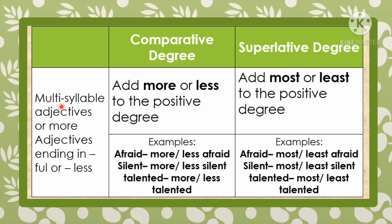For multi-syllable adjectives or adjectives ending in -ful or -less, to form the comparative degree, add 'more' or 'less' before the positive degree. Examples: 'afraid' becomes 'more afraid' or 'less afraid.' 'Silent' becomes 'more silent' or 'less silent.' 'Talented' becomes 'more talented' or 'less talented.'